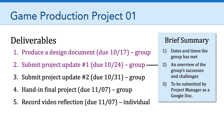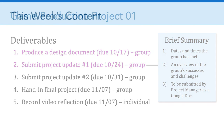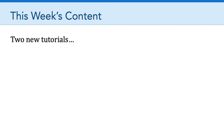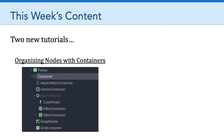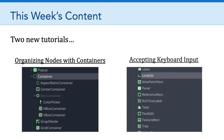You will submit that assignment to the game production Project 1 assignment in Canvas, just like you did with the design documents. In terms of content for this week, I'm keeping it very simple and providing just two new tutorials. The first tutorial is focused on organizing nodes with containers, and it introduces the horizontal box container and the vertical box container.